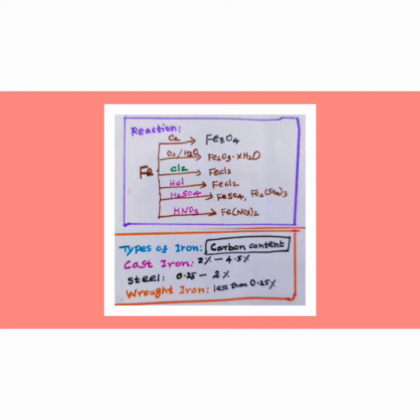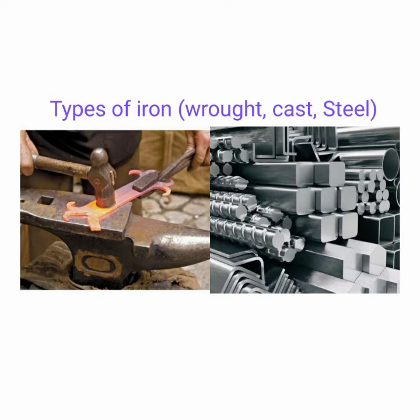The types of iron, there are three types we classify according to the carbon content. In cast iron, the carbon content is 2 to 4.5 percentage. When it is steel, 0.25 to 2 percentage. Wrought iron, it is less than 0.25 percentage.